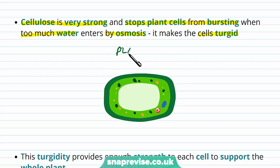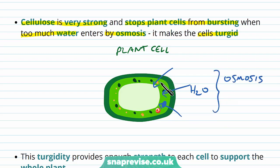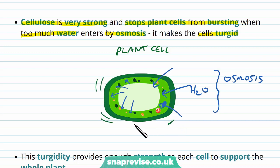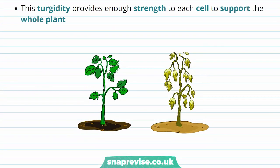If we look at a plant cell here, if water is plentiful, then water enters the cell from the outside by osmosis. If an animal cell were to take in this much water, it would simply burst open and die. But instead, as the water swells up, it pushes up against the cell wall, and the cell wall prevents the plant cell from bursting. It holds its shape but still swells up, and this is called being turgid. This turgidity provides enough strength and support for every single cell in the plant so that the whole plant can be supported.